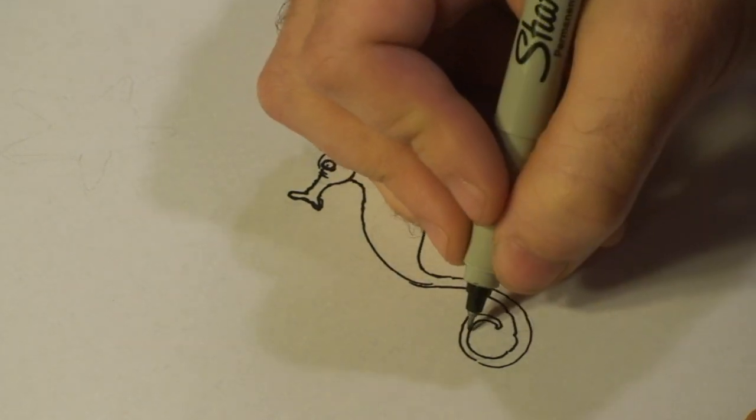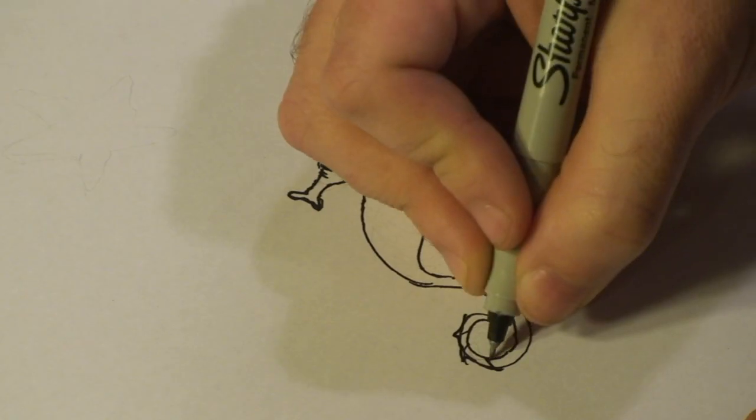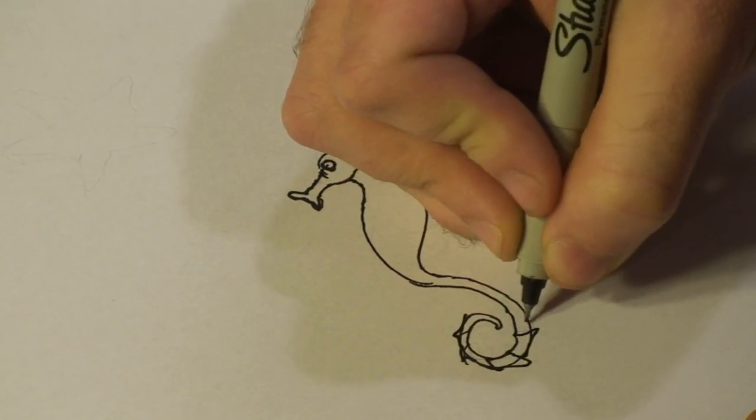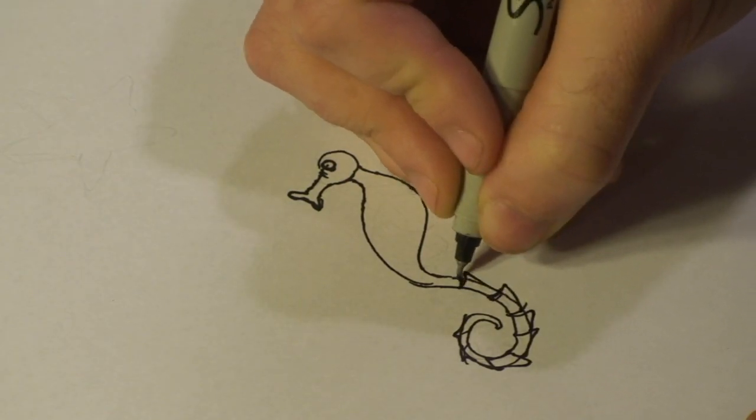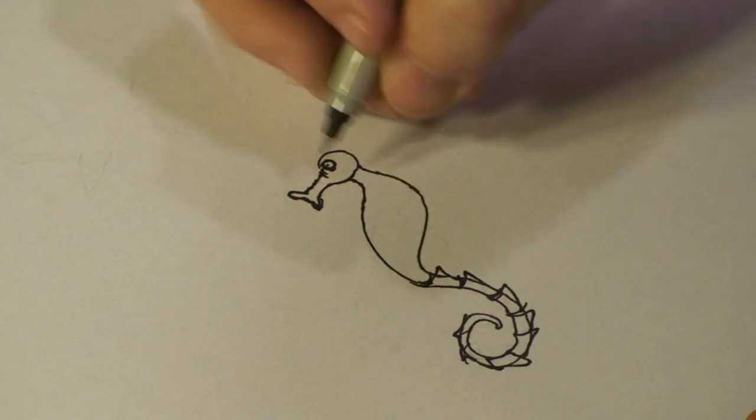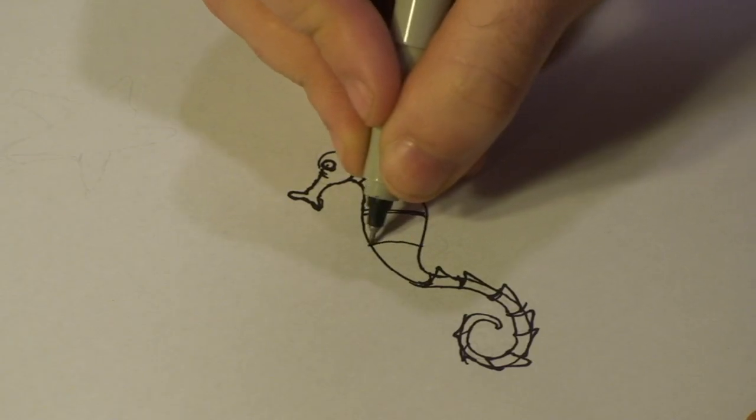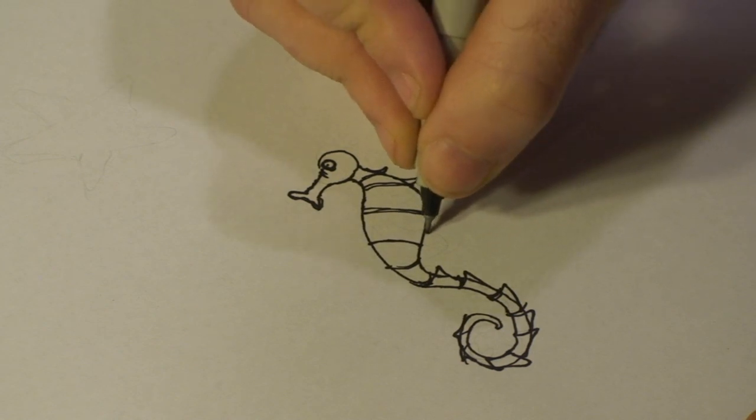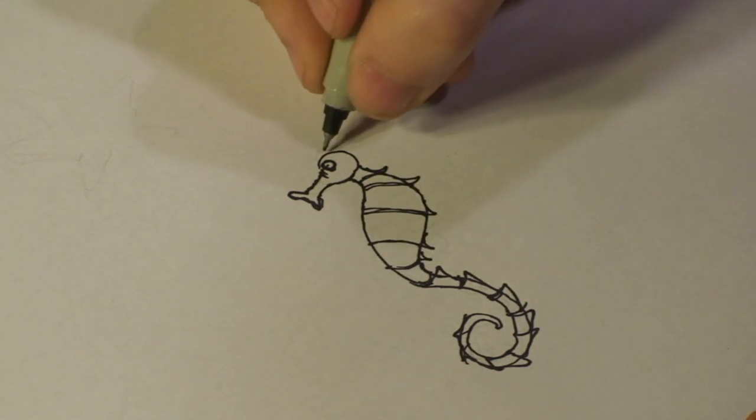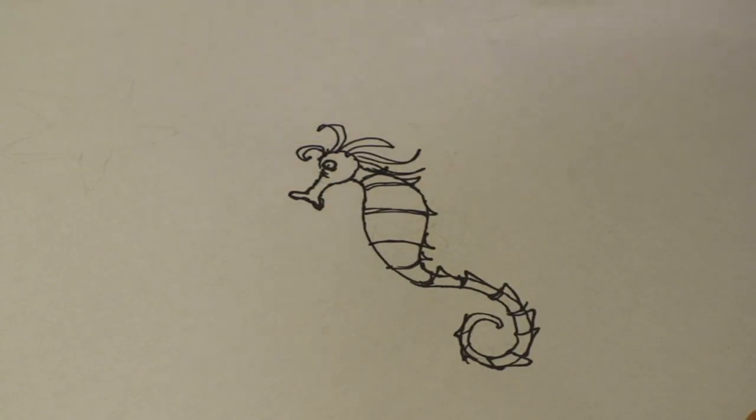Now we have this basic build. We're now going to go ahead and add a bit of bone structure to it. So. That's more detail. That's our seahorse.